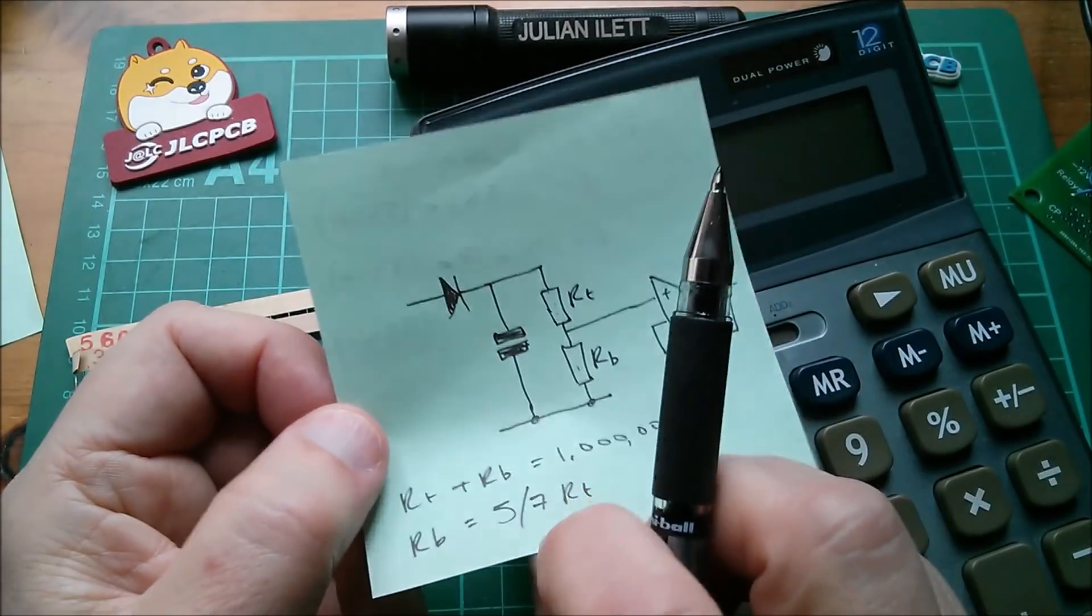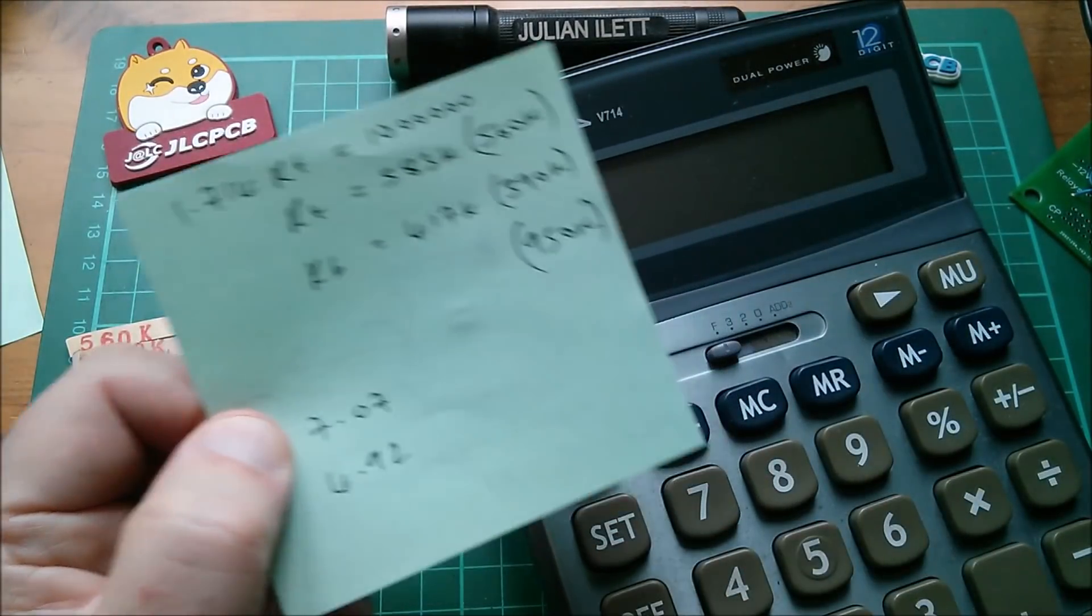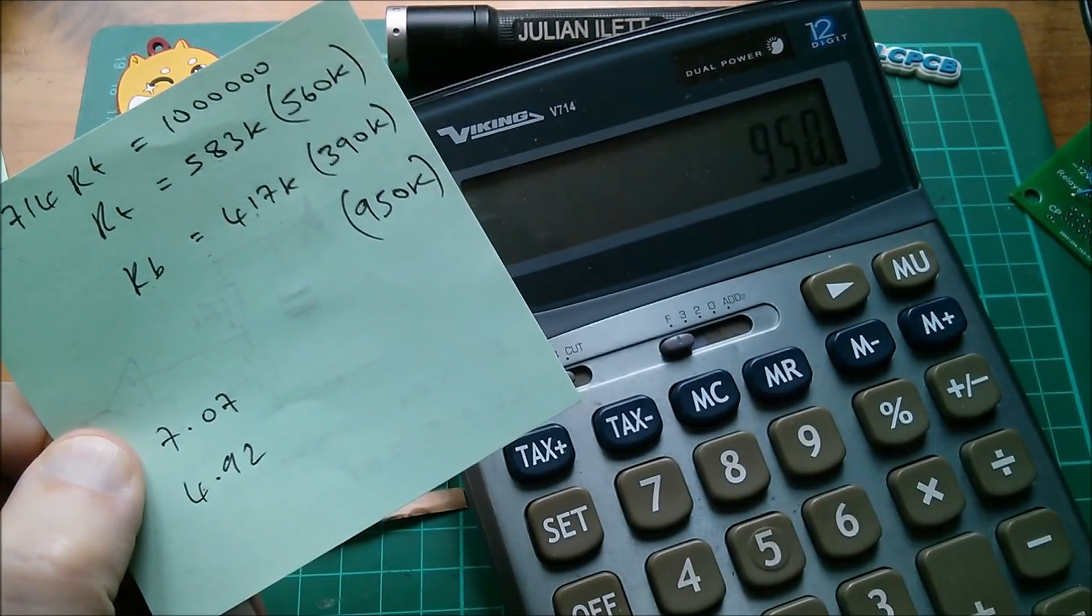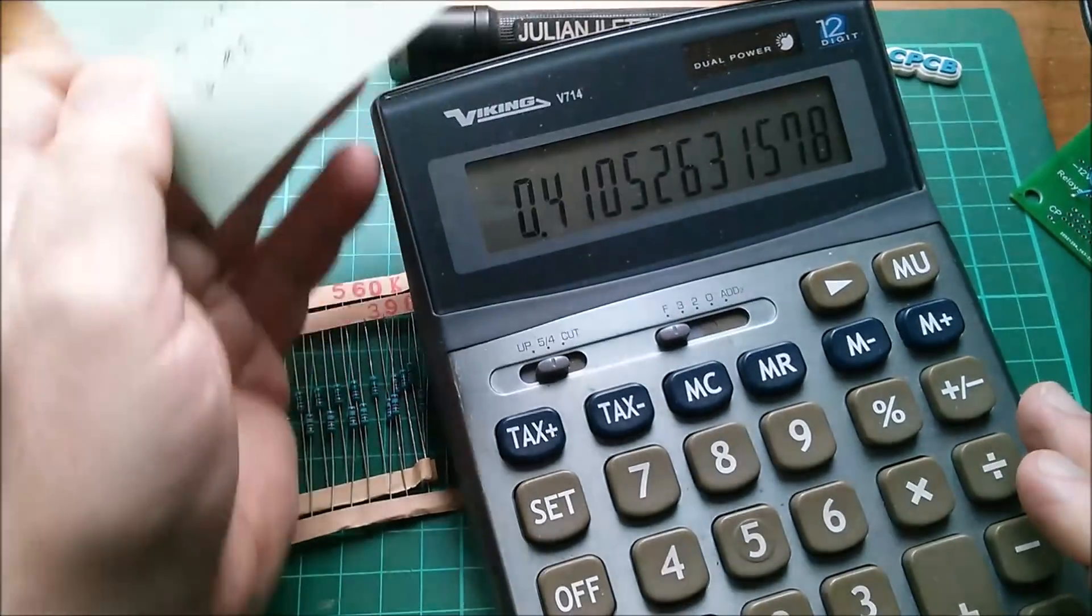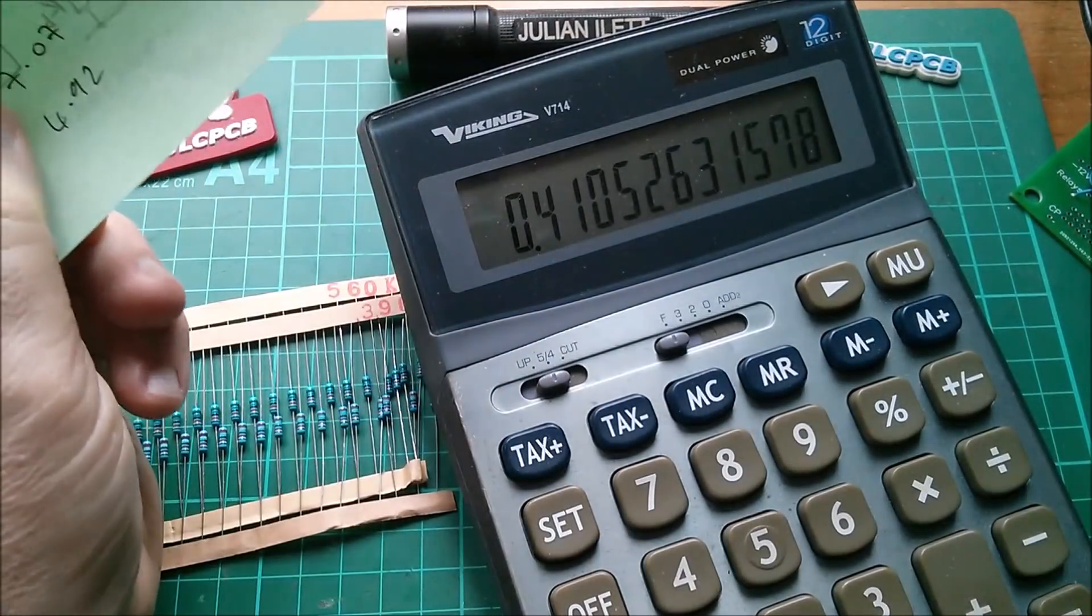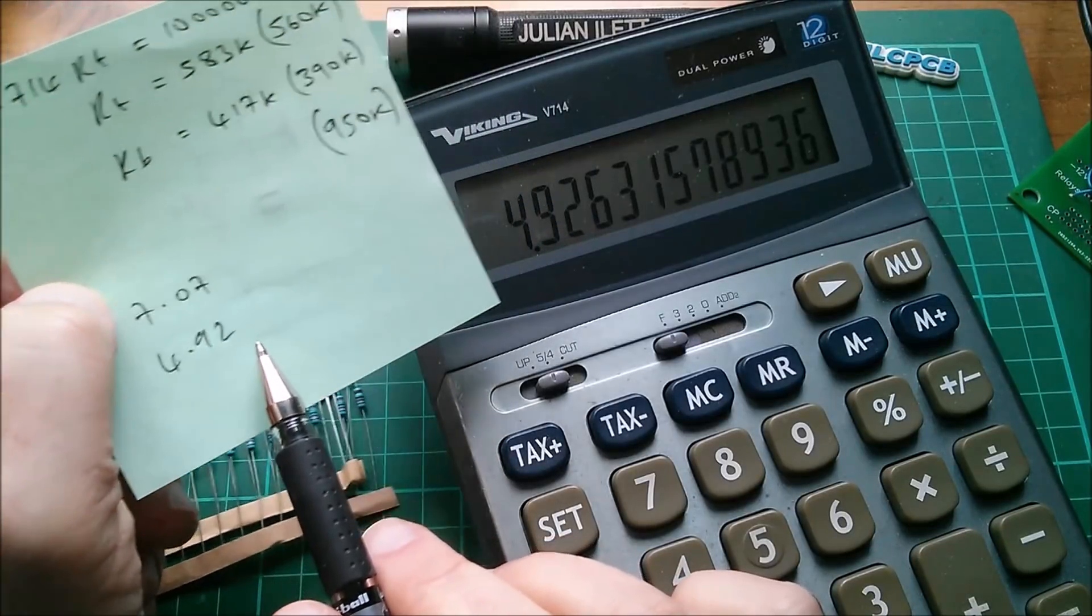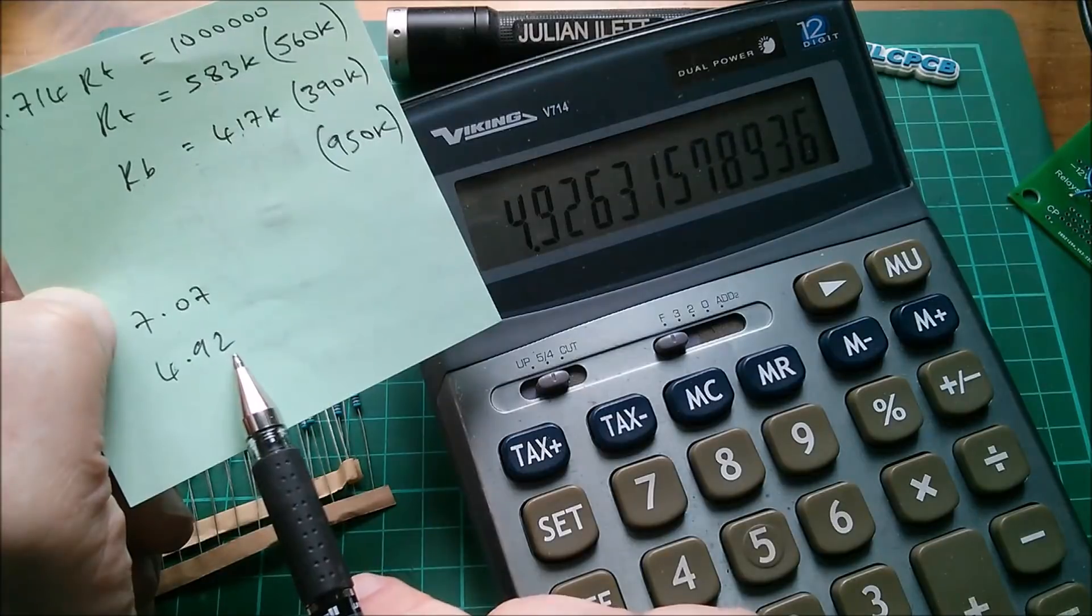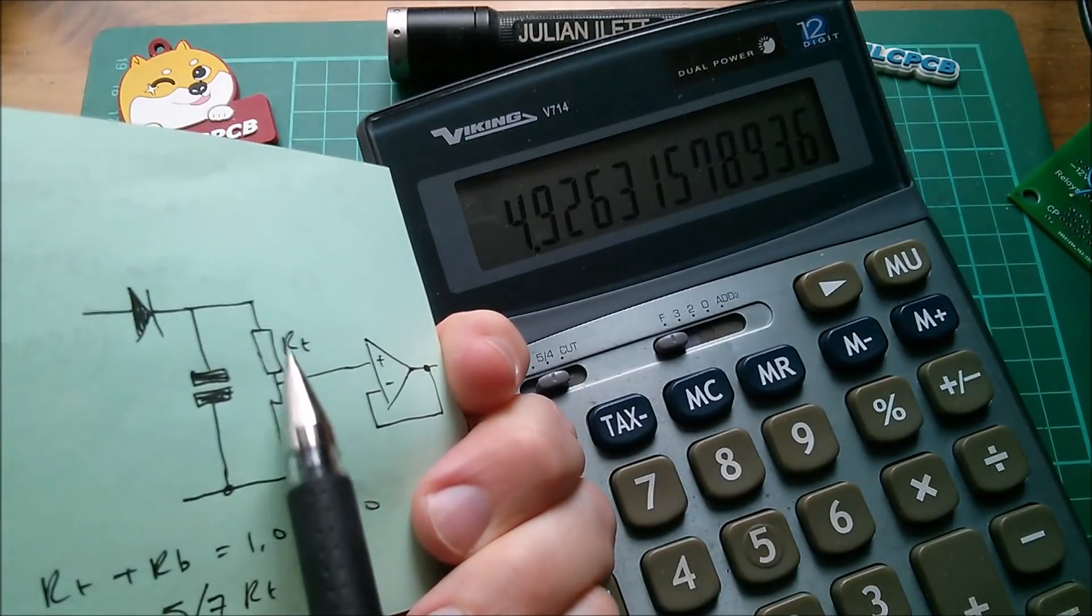Rb will be the lower value, 390 divided by 950. Let's do that: 390 divided by 950 is 0.410. Multiply that by 12, which is the incoming voltage, and that gives us 4.92. You can see the value there, so it's a little bit low, because I wanted 5 volts as a reduction from 12 volts.